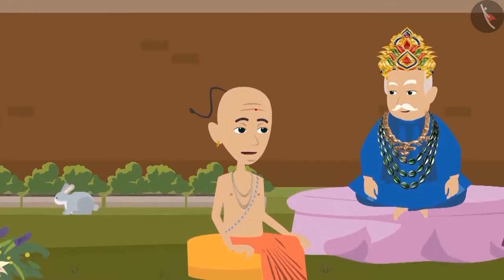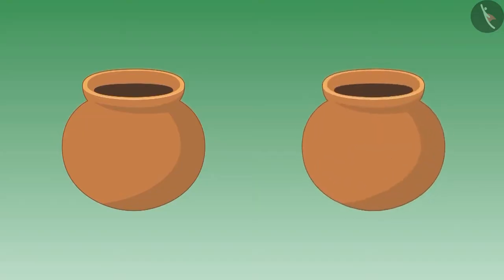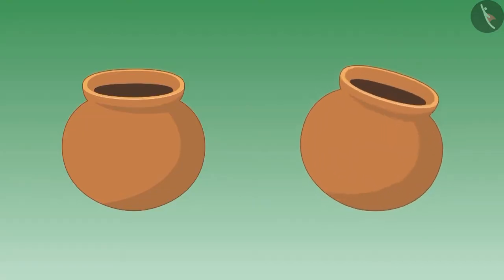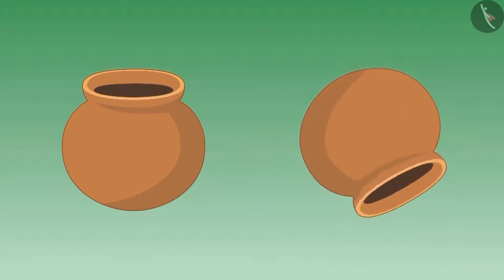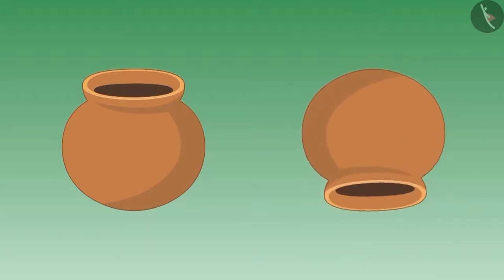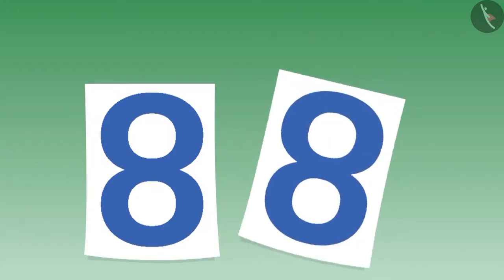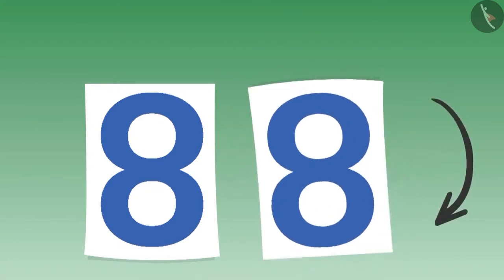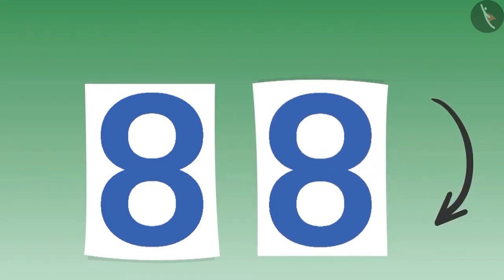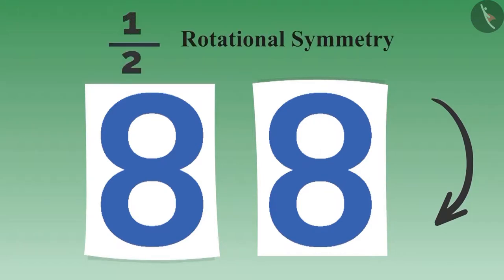The king asked: Tenali Ramaji, how did you get this idea? Tenali Raman replied: your highness, to rotate an object means to turn it around a point. The magician said he would rotate an object upside down. If you write eight on a paper and rotate the paper like this, you will see eight as it was before. This is called half rotational symmetry.